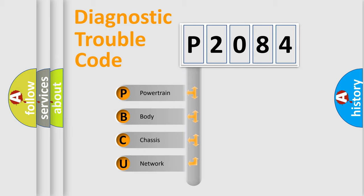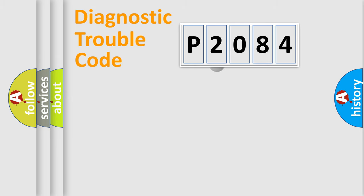We divide the electric system of automobile into the four basic units. Powertrain. Body. Chassis. Network. This distribution is defined in the first character code.